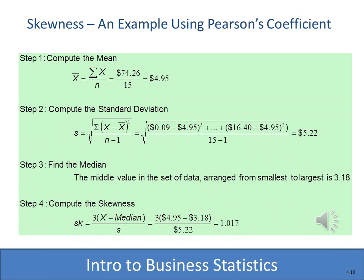Computing by hand or with a calculator, we get a mean (X-bar) of $4.95. The standard deviation of the sample — using the formula with n − 1 — is $5.22. The median is $3.18. Plugging into Pearson's formula: 3 × (X-bar − median) / s gives a skewness of 1.017, indicating the data is skewed in the positive direction.